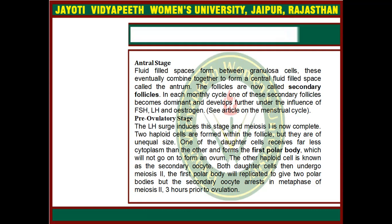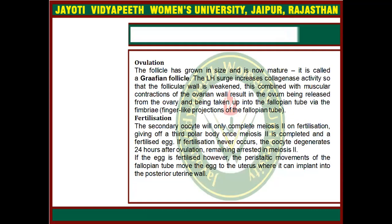The secondary oocyte rests in metaphase of meiosis 2 about 3 hours prior to ovulation. In the ovulation process, the follicle has grown in size and is now mature, called the Graafian follicle. The LH surge increases collagenase activity so that the follicular wall is weakened, and this combined with muscular contractions of the ovarian wall results in the ovum being released from the ovary and taken up into the fallopian tube via the fimbriae, which are finger-like projections on the fallopian tube.